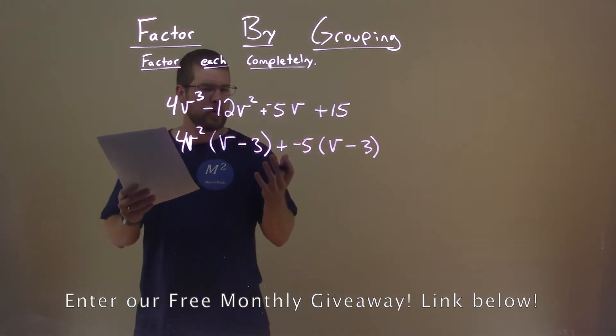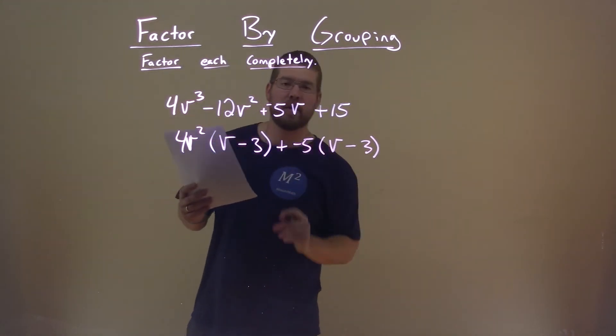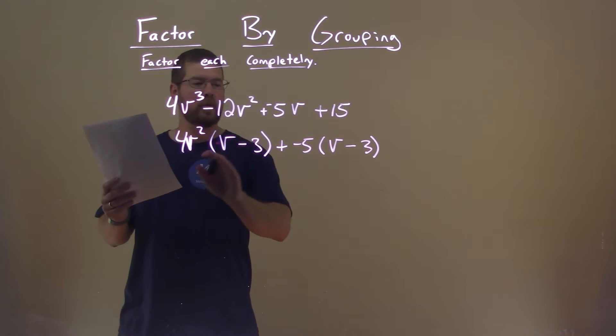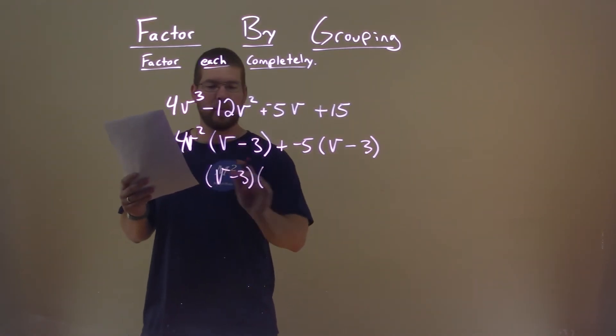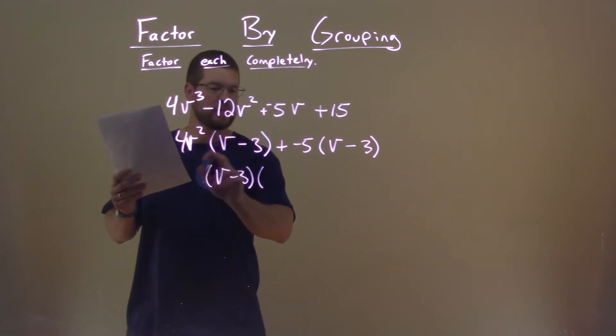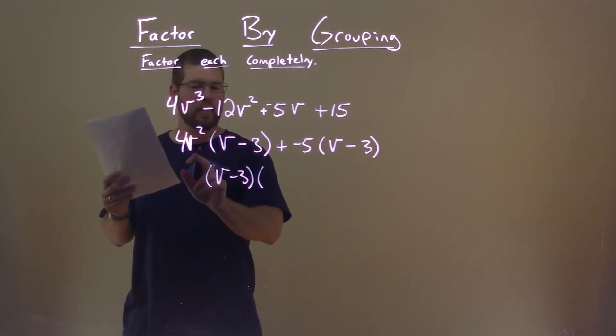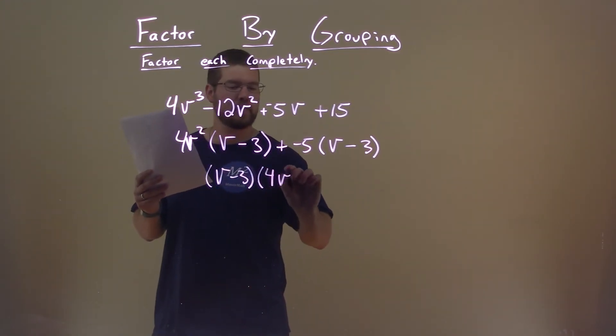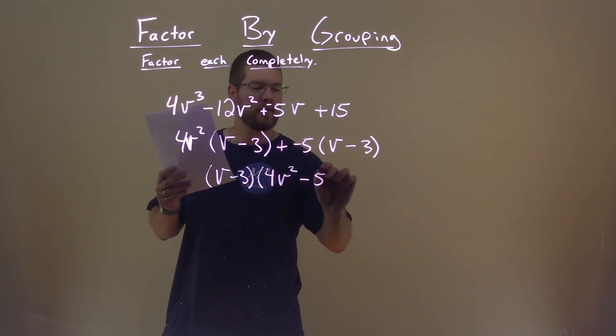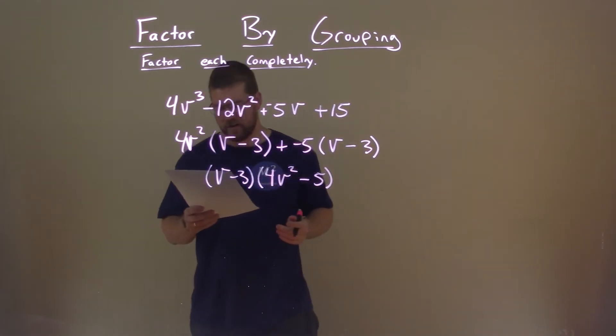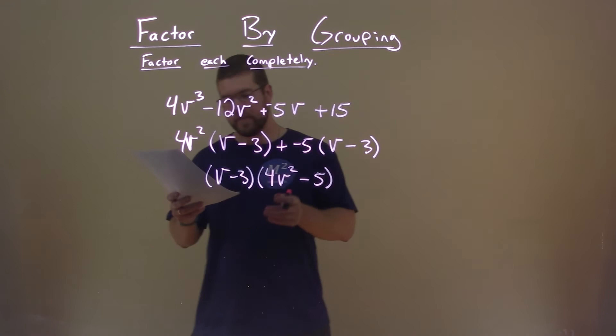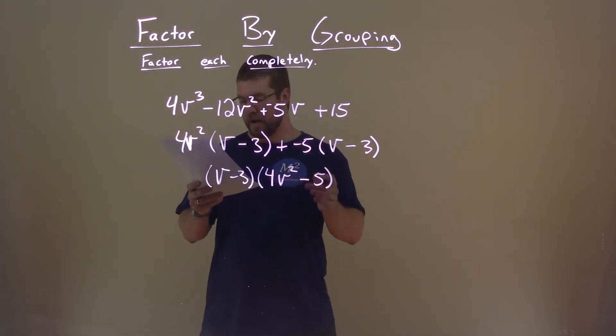And that was kind of our goal. We have a v - 3 and a v - 3 right here. If we pull that out of both parts here, we get v - 3, times now bring that down, so again we're pulling out a v - 3 here, 4v² - 5, and there we have our final answer: (v - 3)(4v² - 5).